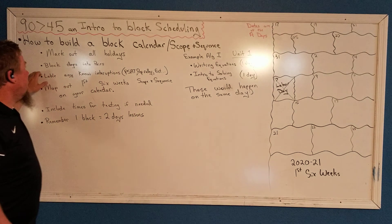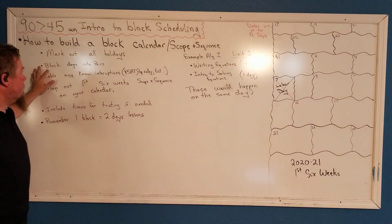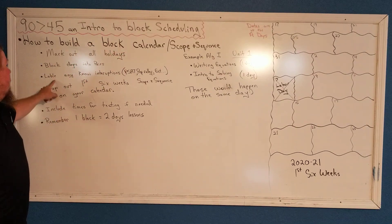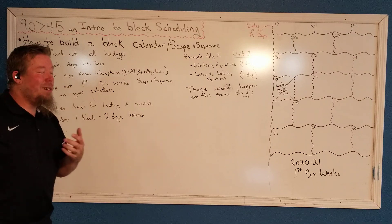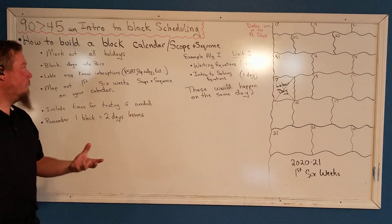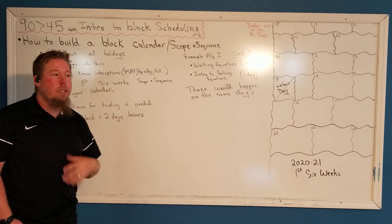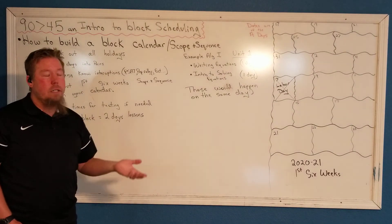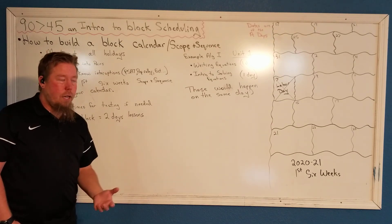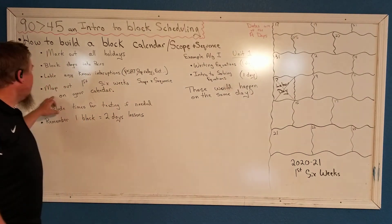You're going to mark out your holidays, put your days into pairs — like the 17th and 18th together, 19th and 20th together — and label any known interruptions. For the first six weeks we don't have a lot. When I say interruptions, I mean things like PSATs, pep rallies — things where the kids aren't necessarily going to be fully active in class, like PSAT day or state testing days. You want to block those out first before you plan anything else.